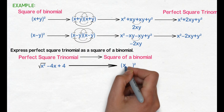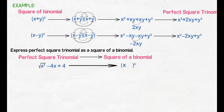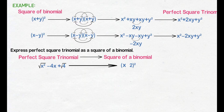Given x square minus 4x plus 4, i-factor natin siya as a square of a binomial. Para makuha ang unang term ng binomial factor, i-square root lang natin ang quadratic term — square root of x square is x. Para makuha naman ang second term, i-square root natin ang constant term — square root of 4 is 2. Para makuha kung anong sign ang ilalagay, gagayahin lang natin ang sign ng linear term. In this example, negative ang sign, kaya negative or minus sign ang ilalagay. So we have quantity x minus 2 square.